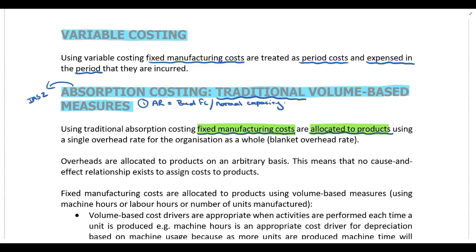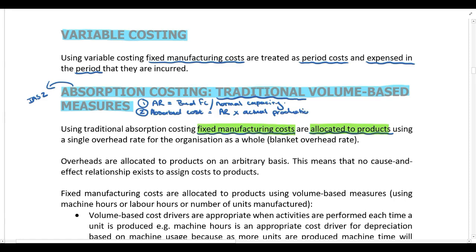If normal capacity is not given, you can use the budgeted capacity for the year. At the beginning of each year, we calculate an allocation rate: budgeted fixed cost divided by normal capacity. Then in step two, we calculate our absorbed cost by taking our allocation rate and multiplying by actual production. It is the absorbed cost which is taken to cost of sales and used to value inventory.